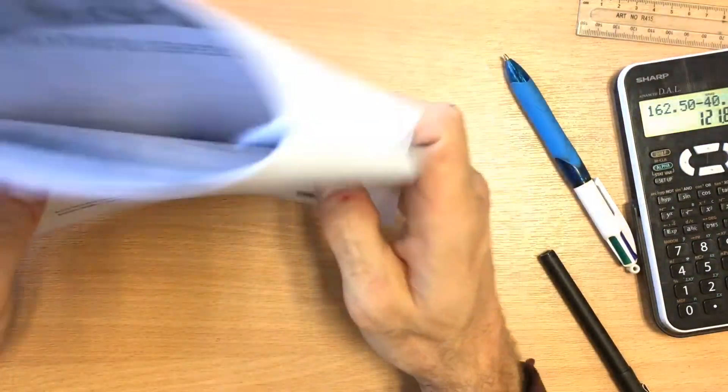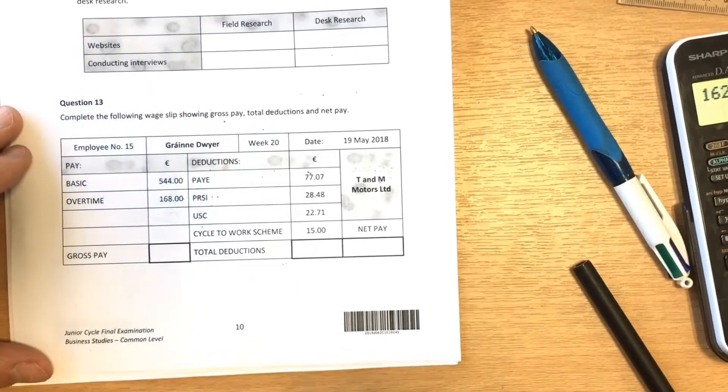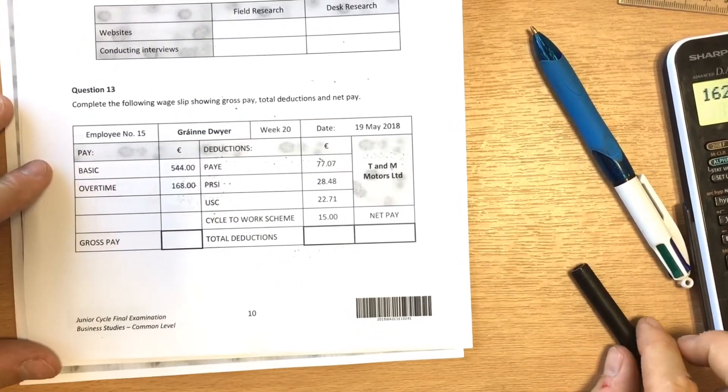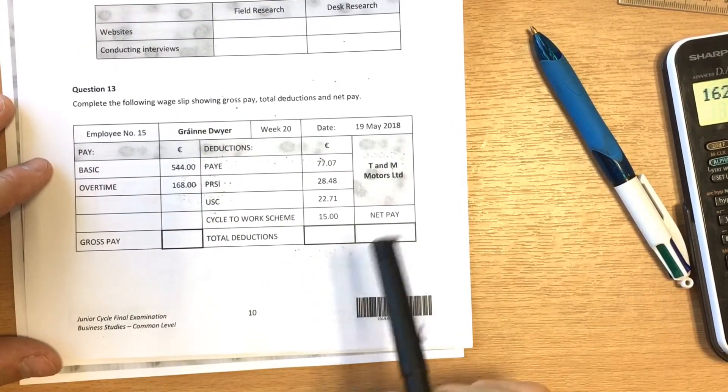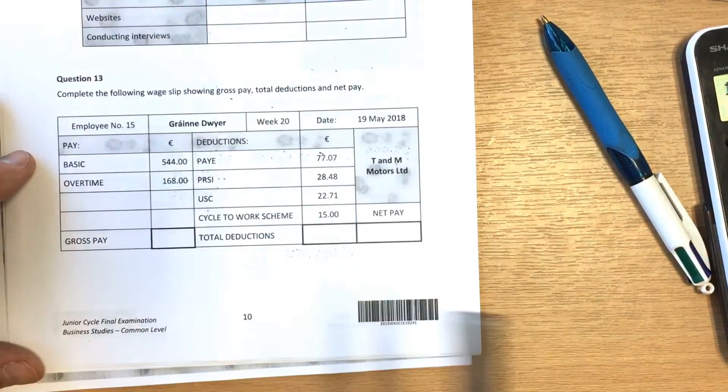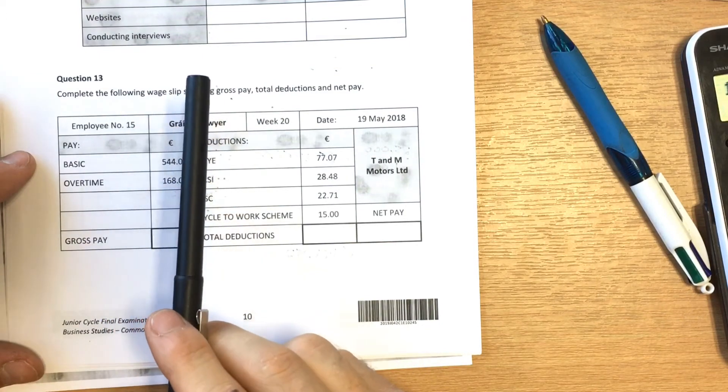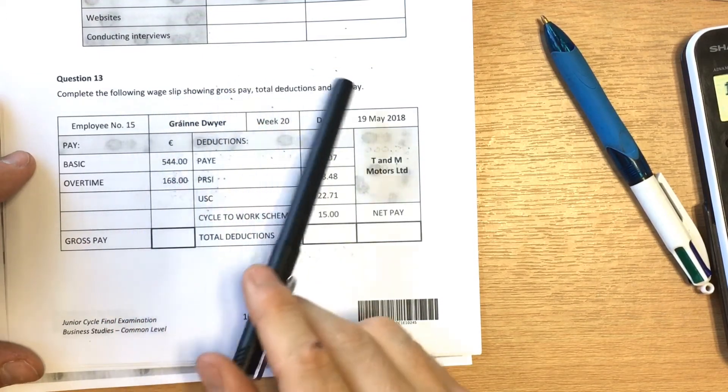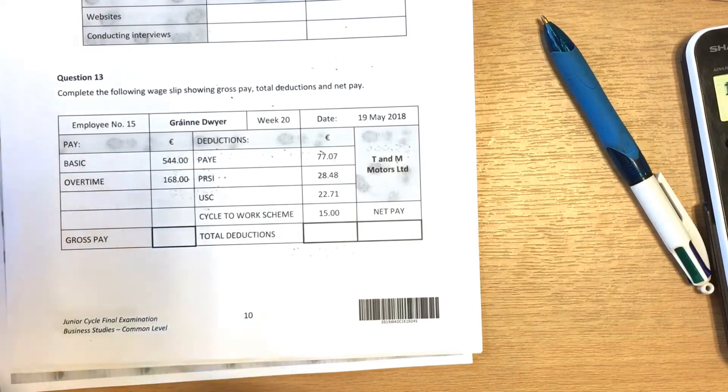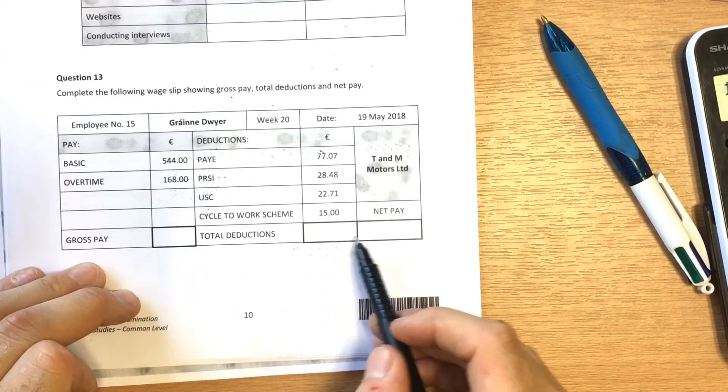For this video I am going to concentrate on Question 13, which is all about wage slips. This is a fairly basic wage slip, but at the same time it's only easy when you know how. Question 13 says complete the following wage slip showing gross pay, total deductions, and net pay. We can see down here that we have three boxes with bold lines around them - that's where you put your answers.